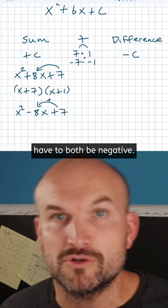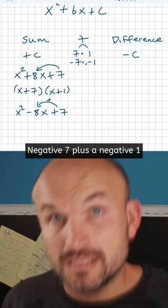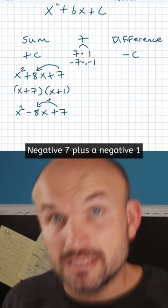So negative seven times negative one is positive seven. Negative seven plus a negative one is going to be a negative eight. So this one is going to be x minus seven times x minus one, and voila.